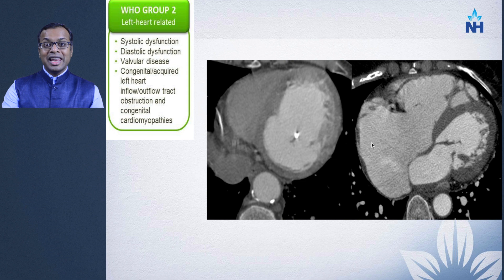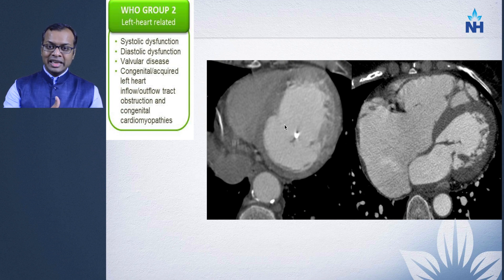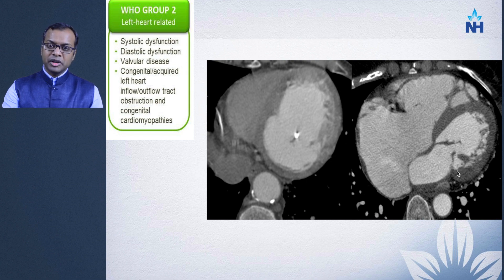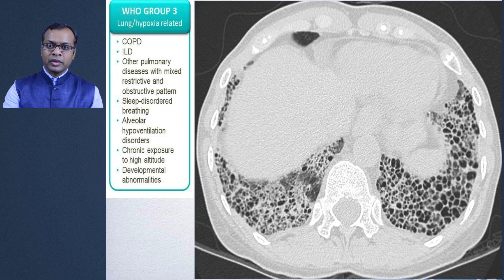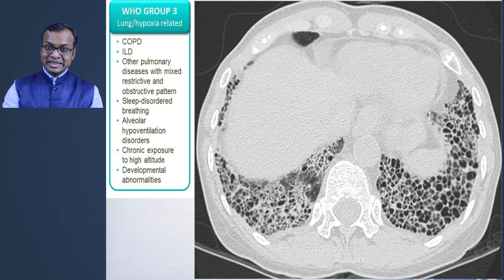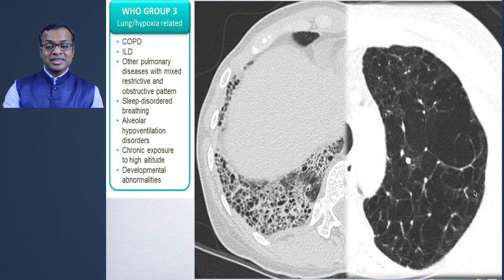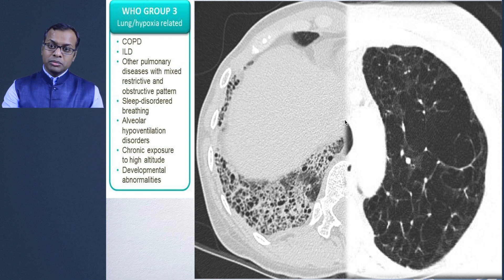Group 2 is about left heart dysfunction. A patient with dilated cardiomyopathy and diastolic dysfunction leads to back pressure into the LA and pulmonary veins, causing pulmonary hypertension. Another example is thickening of mitral valve leaflets consistent with mitral stenosis. Group 3 pathologies include interstitial lung disease with extensive honeycombing and fibrosis, or severe emphysema — all causing hypoxia and leading to pulmonary hypertension.